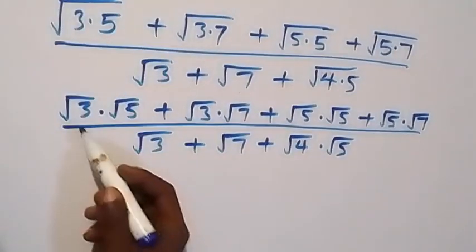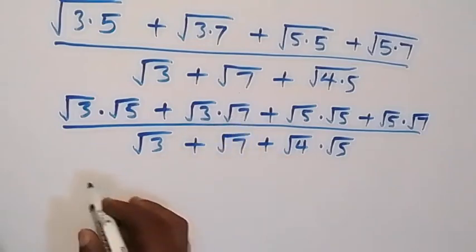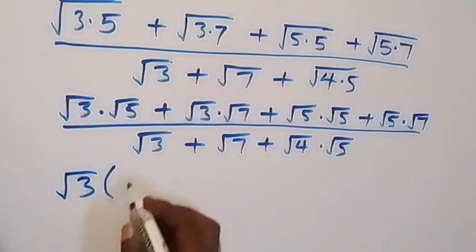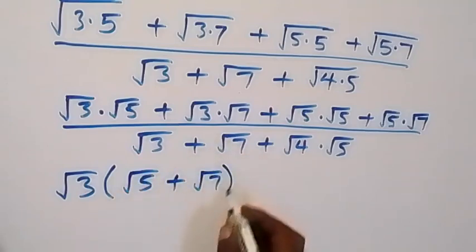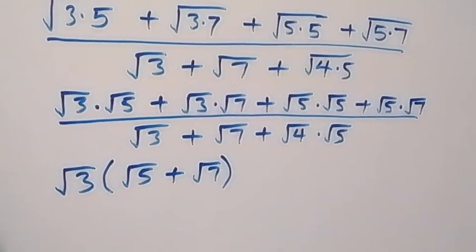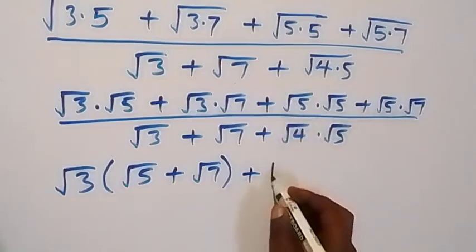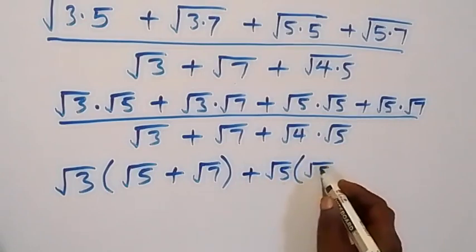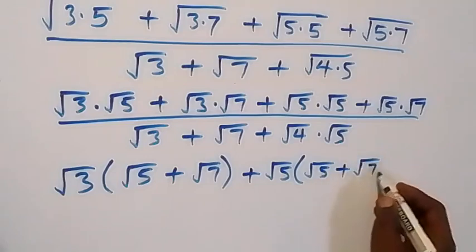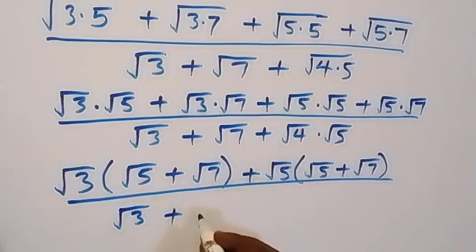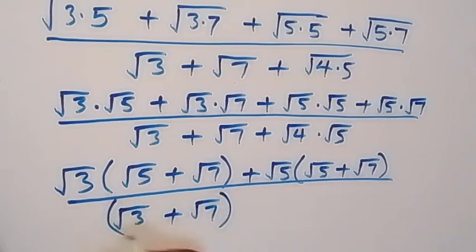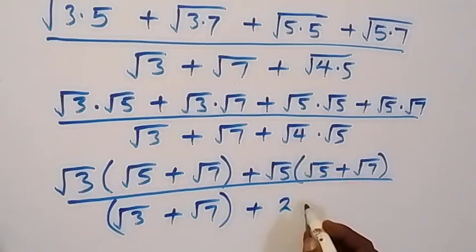From here, what is common between these two terms we can factor out — this gives us root 3 common, root 5. So what remains here is root 5, then plus root 5. Then what remains here, we have root 5 plus root 7 as well, then divided by what we have in the denominator. Here you can write it as root 5 plus root 3, plus root 3 plus root 7, then plus here we have root 5 plus root 5. Root 4 is 2 there.